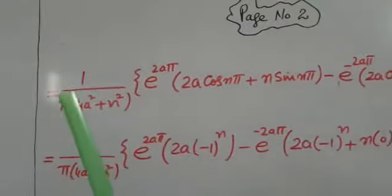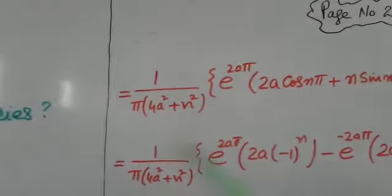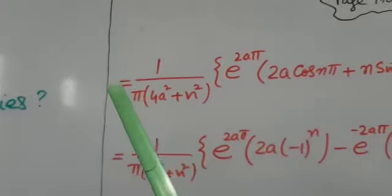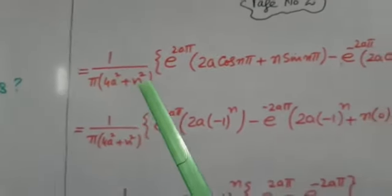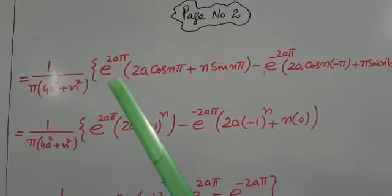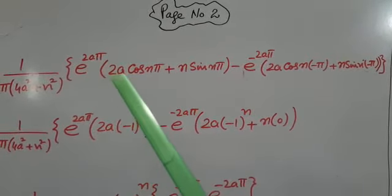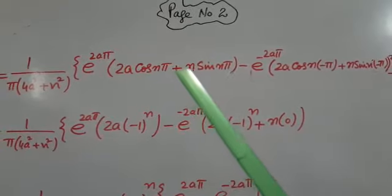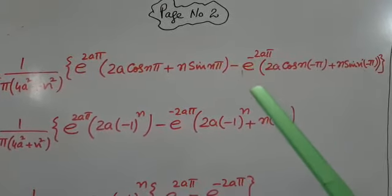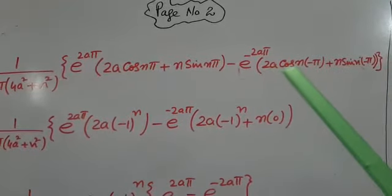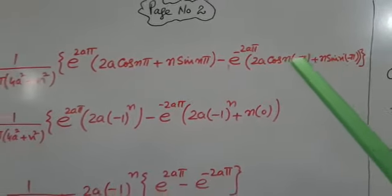Now we have to find aₙ equals 1 over π into 1 over 4a² plus n² into e to the 2aπ into 2a cos nπ plus n sin nπ, minus e to the minus 2aπ into 2a cos n into minus π plus n sin n minus π.